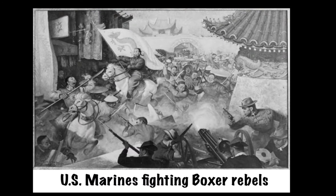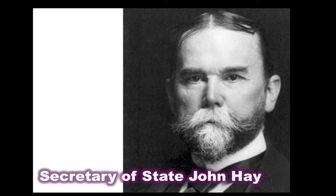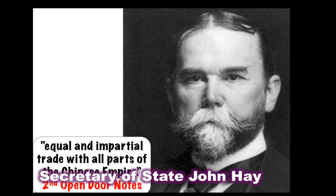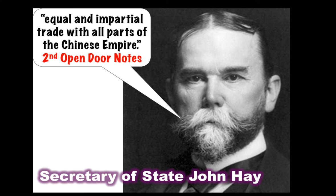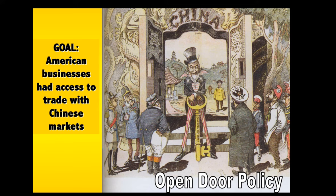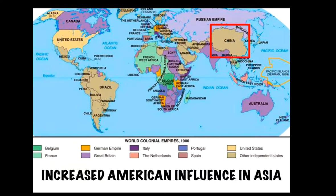In the United States, there was concern that after the defeat of the Boxer Rebellion, European nations and Japan would seek to exert greater control on China. In response, John Hay issued a second series of Open Door Notes, which called for equal and impartial trade with all parts of the Chinese empire. The main goal of this policy — the Open Door Policy — was to ensure American businesses had access to trade with Chinese markets. American involvement in stopping the Boxer Rebellion and the issuing of the Open Door Notes meant the US was beginning to increase its influence in Asia.